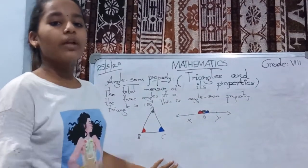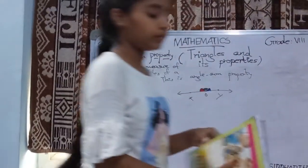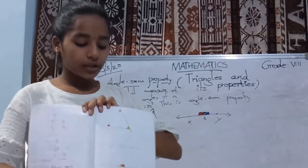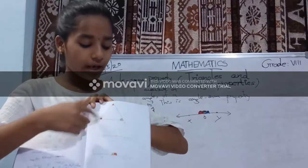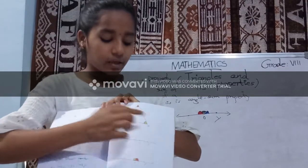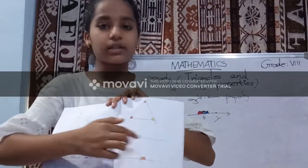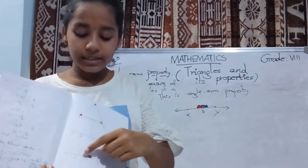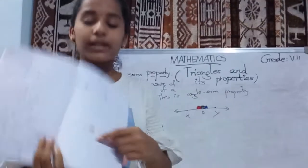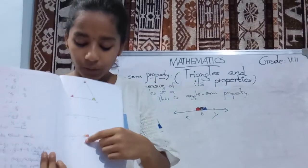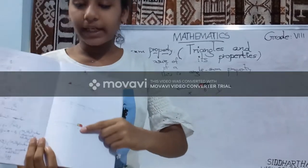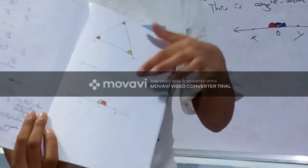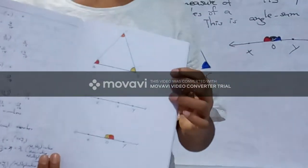I have done this activity so that you can understand clearly. Here I have taken a triangle A, B and C and mapped the angles with different color pencils. Next I have drawn a line segment XY and marked a point O on it. Then I cut these angles and pasted them adjacent to each other to form an angle at O. We see that they form a straight angle which is equal to 180 degrees. So the total measure of the angles of a triangle is equal to 180 degrees. This is the first activity.